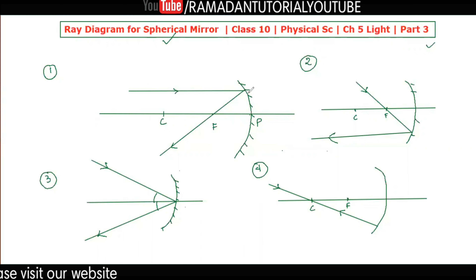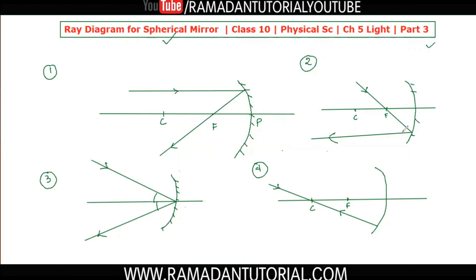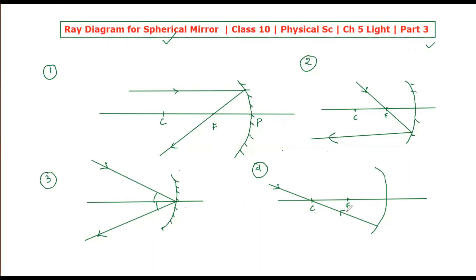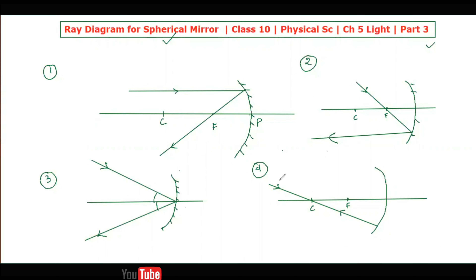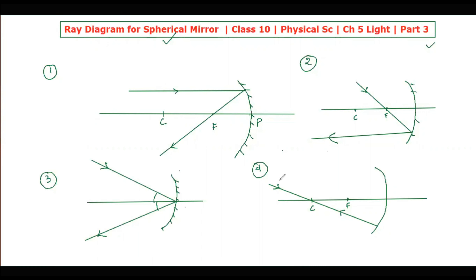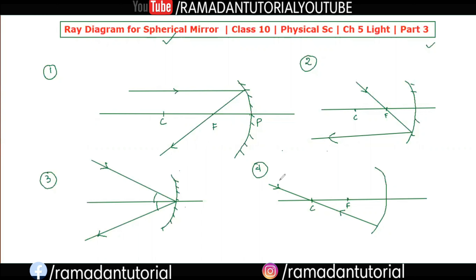Let me now go over these in Hindi as well. First, a ray going parallel is reflected through the focus. Second, a ray going through the focal point is reflected parallel. Third, a ray hitting the pole reflects back. Fourth, a ray through the center of curvature returns the same way. I am trying to keep the class bilingual, so I need to use both terminologies.